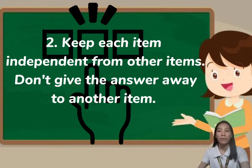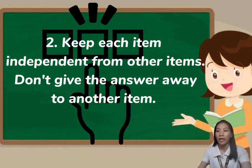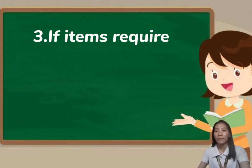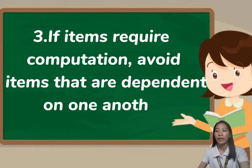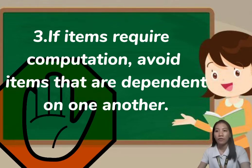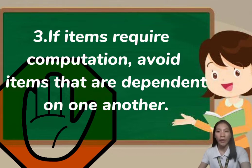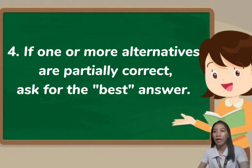Give each item independence from others — don't give the answer away in another item. We should avoid creating choices where answers are visible in subsequent items; instead, arrange them randomly. If items require computation, avoid items that are dependent on one another.